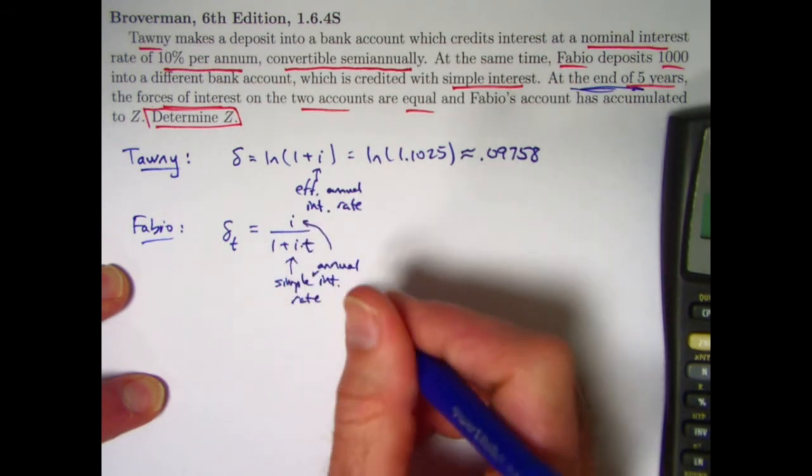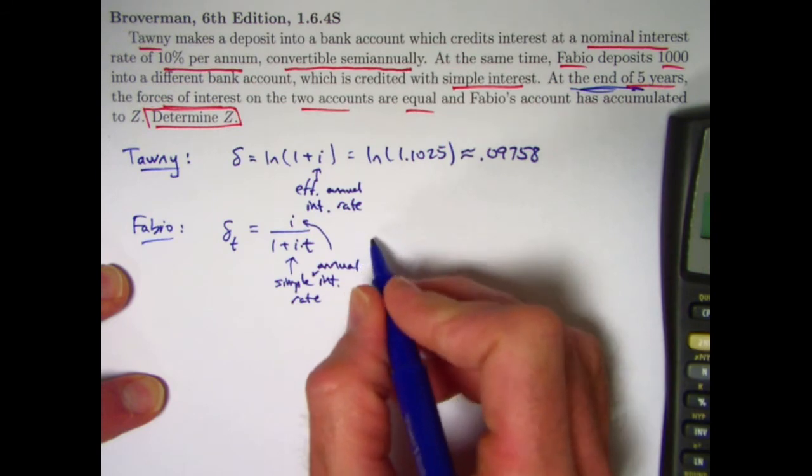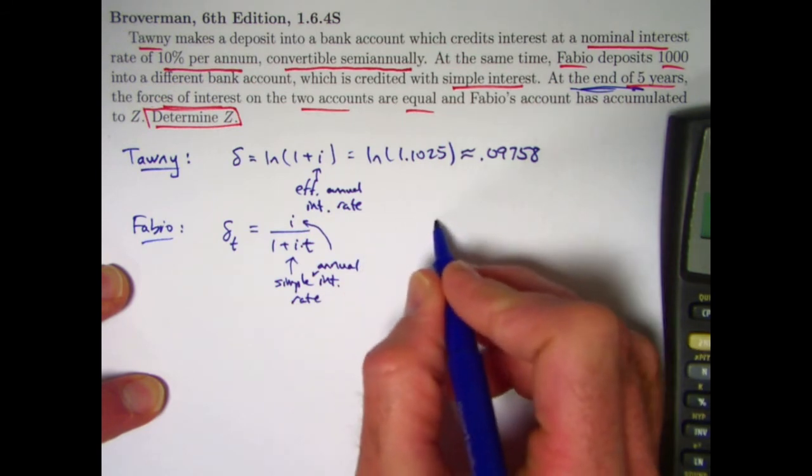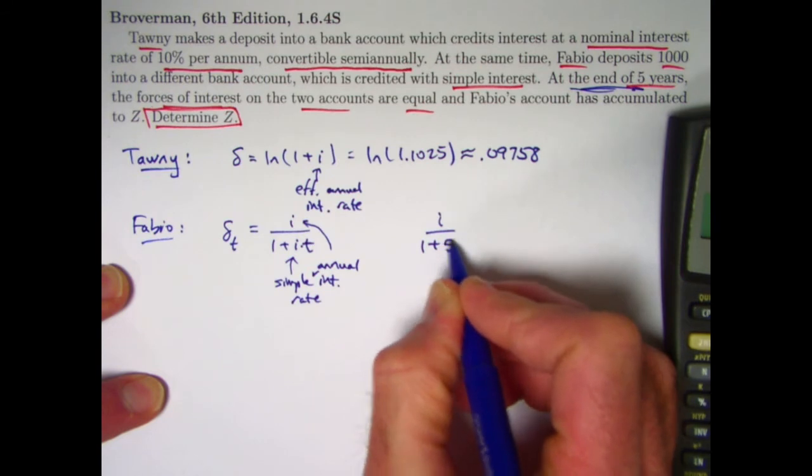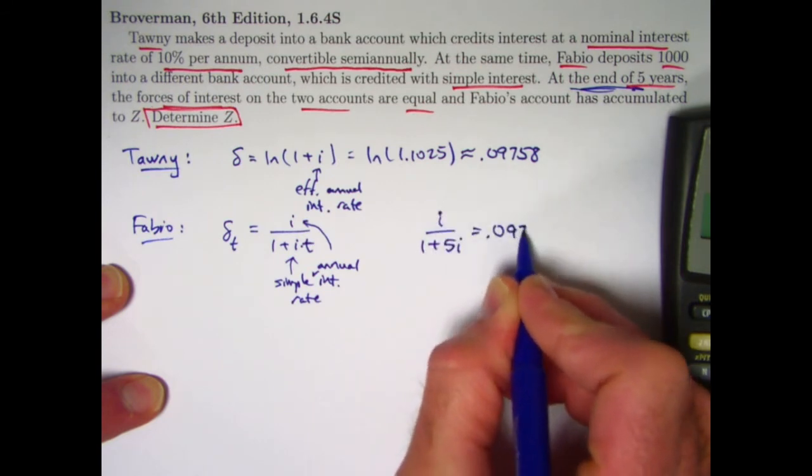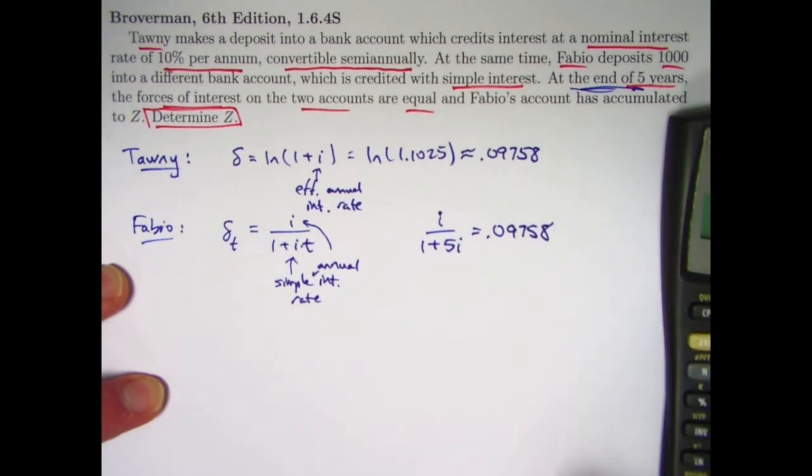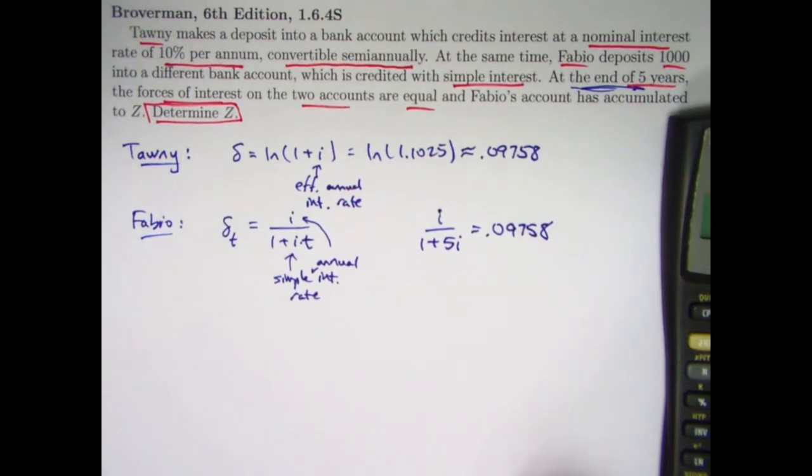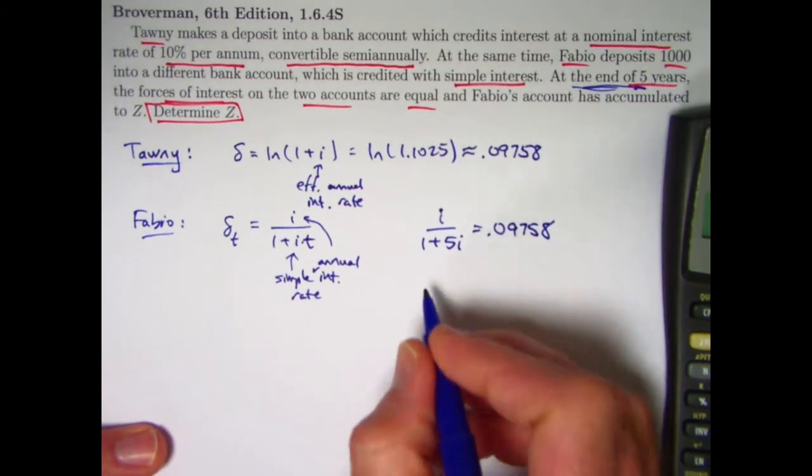This is supposed to equal Tawny's force of interest when T is 5. So what we get from this is that if I replace T by 5 and set it equal to 0.09758, that should give me the value of I, which is Fabio's simple interest rate. And once I've got Fabio's simple interest rate, I can solve the problem. So solve this equation for I.